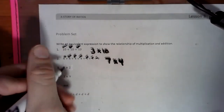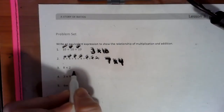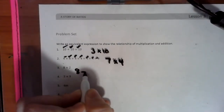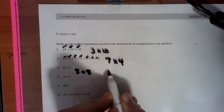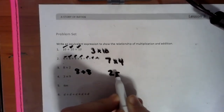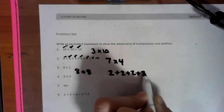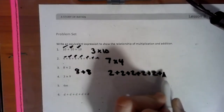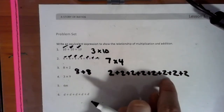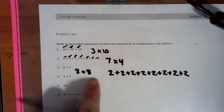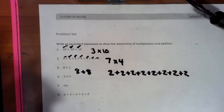Now we have 8 times 2. So we do that by addition. We could say this is an 8 written 2 times. Or we could reverse this and say this is a 2 written 8 times. Either way, 8 plus 8 is 16, or counting by 2s: 2, 4, 6, 8, 10, 12, 14, 16. Either way, that works.